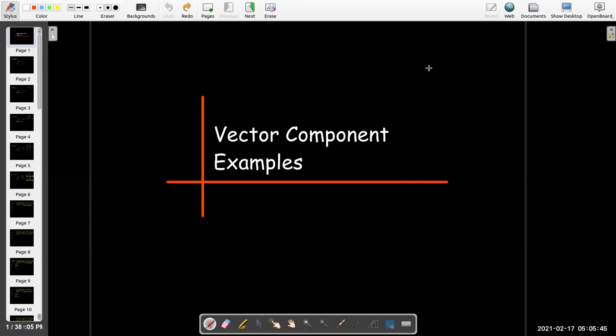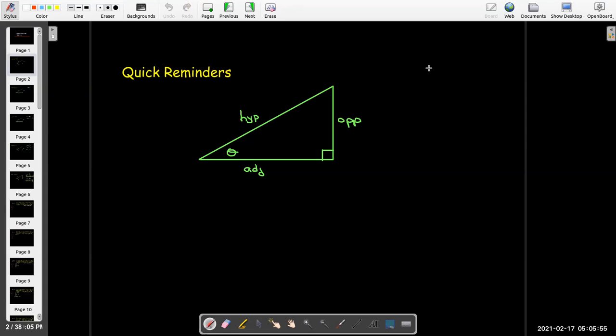In this short video, I'd like to work out a couple of examples where we solve some problems using vector components. To use vector components, we're going to have to remember some triangle trigonometry, and maybe remember it in a slightly different but more useful way.